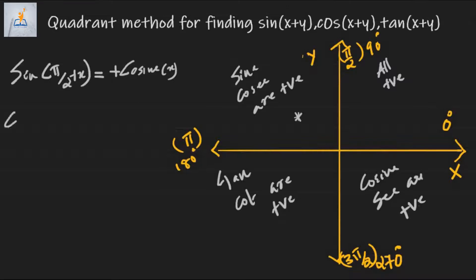Now we find cos(π/2 + x). Since π/2 + x lies in the second quadrant and cosine is negative there, the answer will be negative. Since the sum is taken with an integral multiple of π/2, the function changes to its co-function, which is sin x. Therefore, cos(π/2 + x) = −sin x.